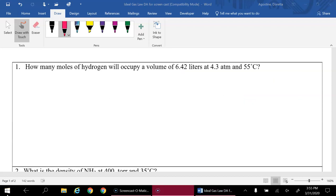So let's read this problem. How many moles of hydrogen, so it means we're solving for moles, will occupy a volume of 6.42 liters at a pressure of 4.3 atmospheres and a temperature of 55 degrees C.